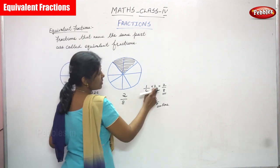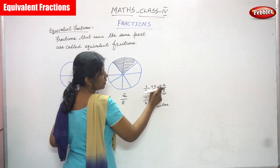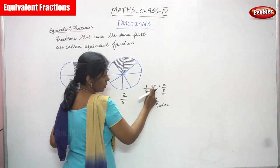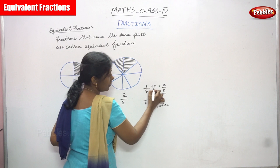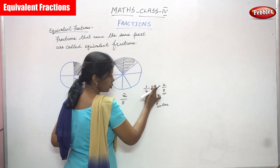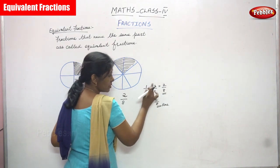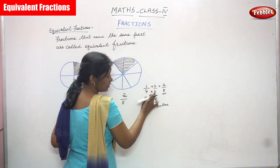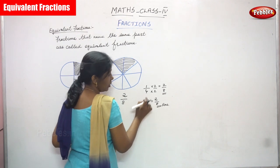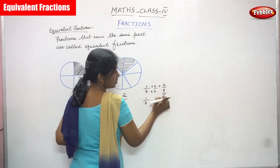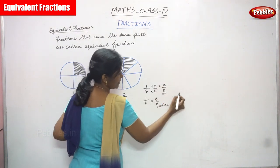So one by four multiplied by two — the numerator is multiplied by two and the denominator is also multiplied by two. That means you can get two by eight.